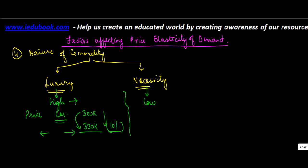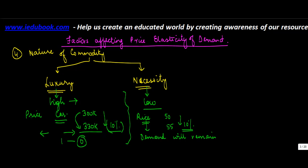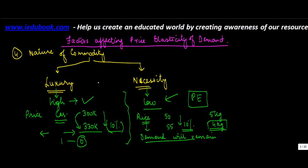Whereas if you have to buy rice and the price increases from 50 to 55 — again an increase of ten percent — because you require rice and have to eat it, the demand will remain; it may go down but not significantly. So for a car, you were buying one and will buy zero, whereas for rice, maybe you were buying five kilograms and will buy four, but the demand will still be there. The price elasticity is normally low for necessities and high for luxuries.